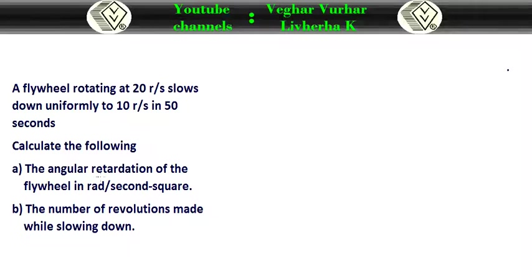We need to calculate the angular retardation — retardation is the slowing down, which is the acceleration — in radians per second squared. We also need to find how many revolutions the flywheel makes while slowing down until it reaches the lower speed.